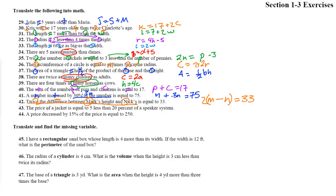Number 43: the price of a jacket is equal to five less than 20% of a speaker system. 'Less than' means minus, but the five goes on the other side. 20% is 0.2, so that's 0.2S — S for speaker system — and then subtract five: Price = 0.2S − 5.